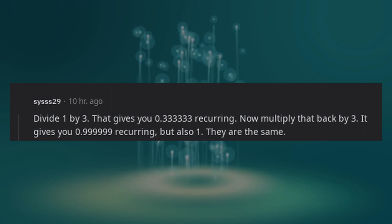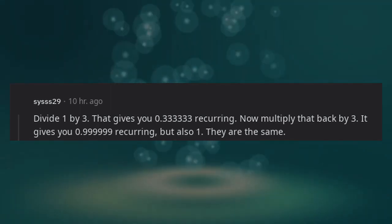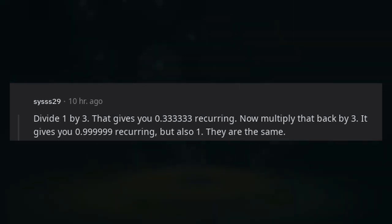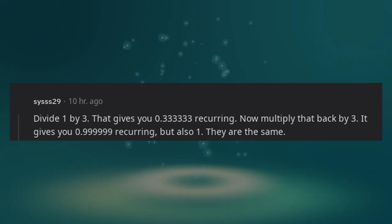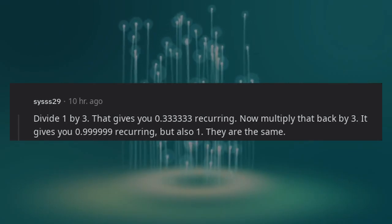Divide 1 by 3. That gives you 0.333333 recurring. Now multiply that back by 3. It gives you 0.999999 recurring, but also 1. They are the same.